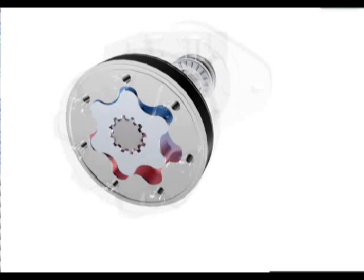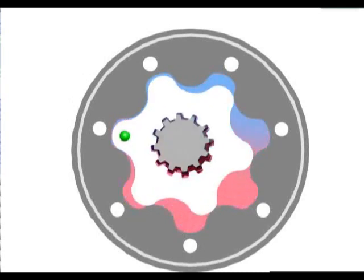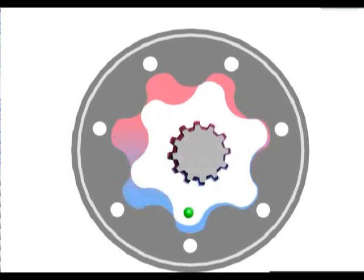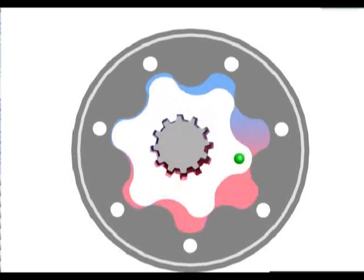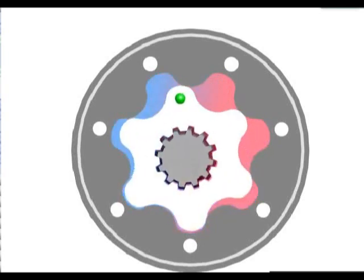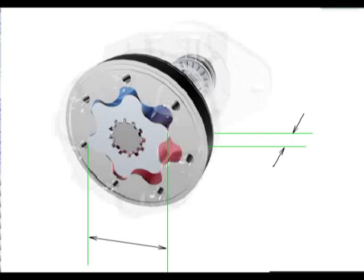These cycles cause the rotor to orbit around the inside of the stator. For each orbit the rotor makes, the rotor rotates one tooth in relation to the stator. Since this stator has seven teeth, it takes seven orbits of the rotor to complete one rotation of the output shaft. This creates a seven-to-one speed reduction and a similar multiplication of the torque output. Torque output from the motor is a result of pressure against the side of the rotor in the cavity between the rotor and the stator. The diameter and width of the rotor dictate the area available for the pressure to work against to create torque.